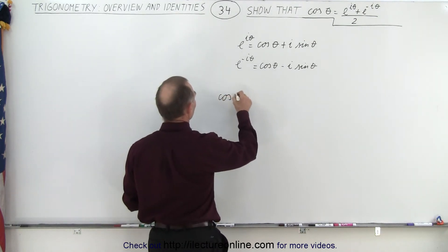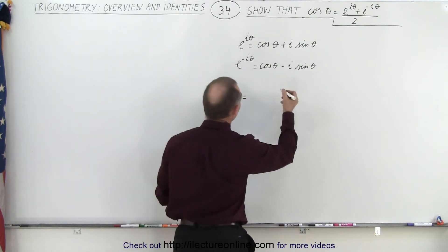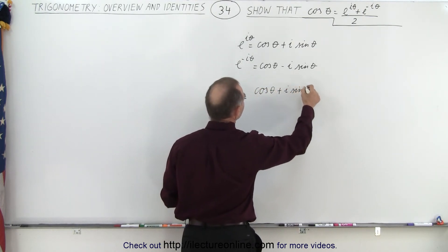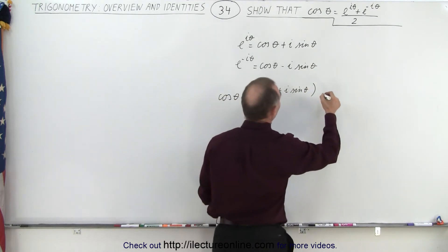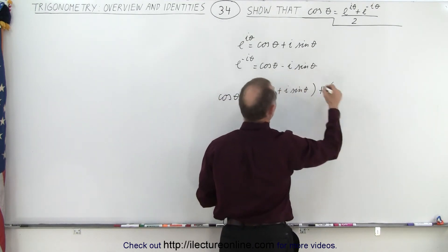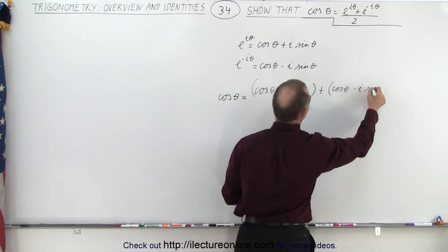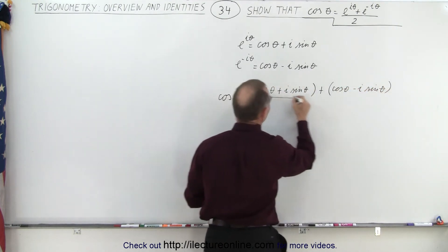Because now we have the cosine of theta is equal to, in the numerator we'll get the cosine of theta plus i sine of theta plus the cosine of theta minus i sine theta, all divided by two.